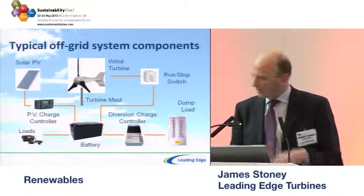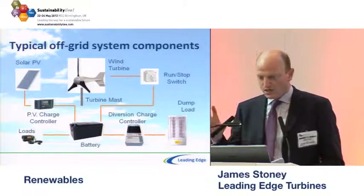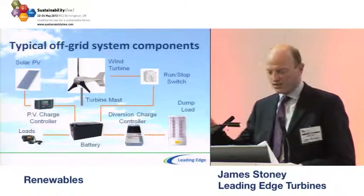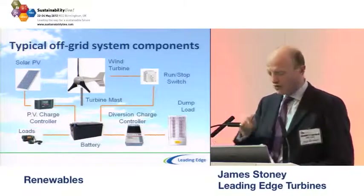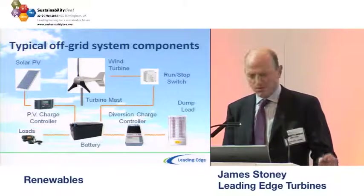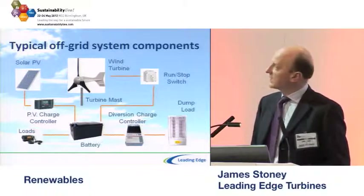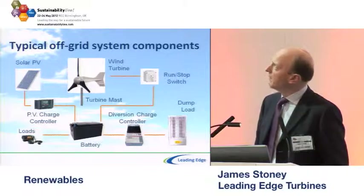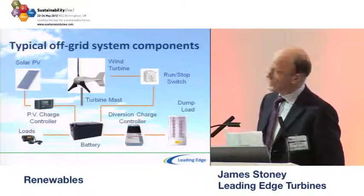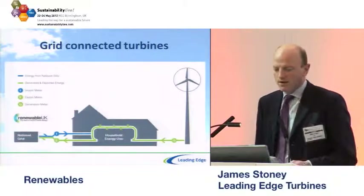For off-grid systems, the key place to start is your loads — unless you determine and minimize your energy use first, you end up with a huge requirement for solar panels and turbines, making it more expensive. Minimizing loads also reduces the battery size needed, which is dictated by how long you're prepared to go without input from solar panels and the wind turbine. Solar panels typically have their own charge controller, and a diversion charge controller monitors battery voltage and dumps excess heat when batteries reach full charge.